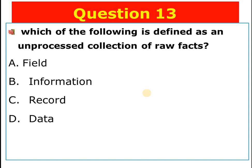Question number fourteen: Which of the following is defined as an unprocessed collection of raw facts? A) Field, B) Information, C) Record, D) Data. The answer is D — data is defined as an unprocessed collection of raw facts.